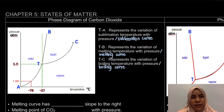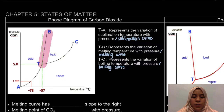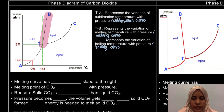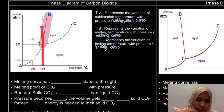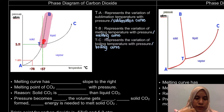For the phase diagram of carbon dioxide, the melting curve has a slope to the right. If we draw a straight line here, we can see it curves to the right. Since it curves to the right, we say it has a positive slope to the right.